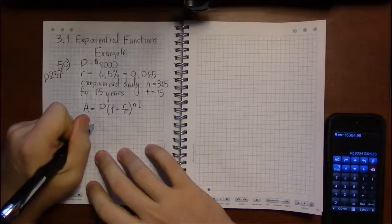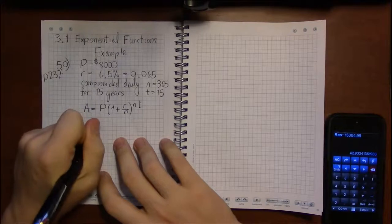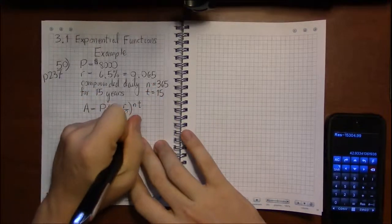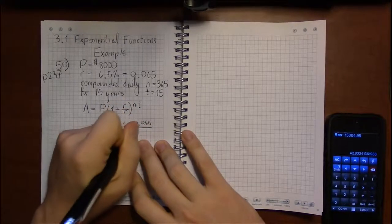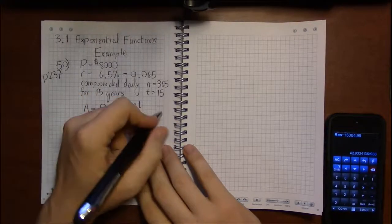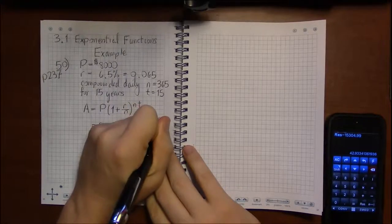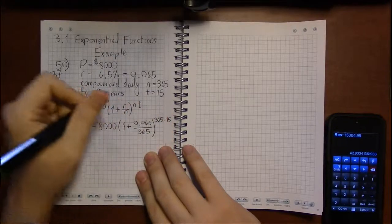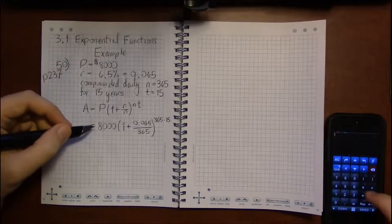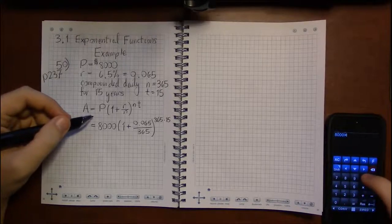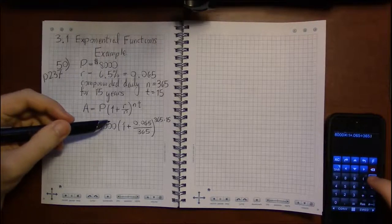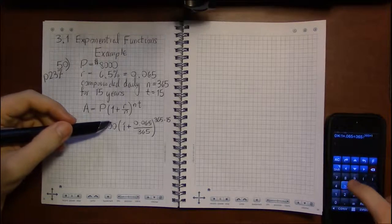So we're going to need to go back to the calculator here to figure this out. So we've got 8,000 times 1 plus r as a decimal is 0.065, and we're dividing that by 365, and then raising that to the 365 times 15. We're raising it to the number of compounds that this account is going to go through through its entire 15 year life cycle. So we're going to take 8,000 times 1 plus 0.065, divide that by 365, and then raise this to the 365 times 15th power.